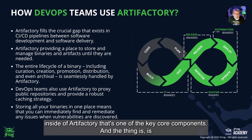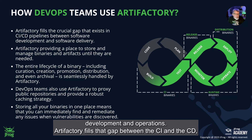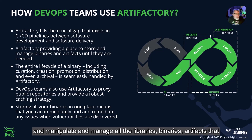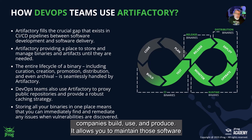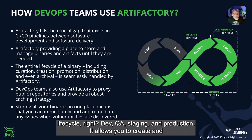DevOps is about development and operations, and Artifactory fills that gap between CI and CD — between the development of software and its delivery. It provides a place to store, manipulate, and manage all the libraries, binaries, and artifacts that companies build, use, and produce. It supports the full SDLC — software development lifecycle — covering dev, QA, staging, and production.